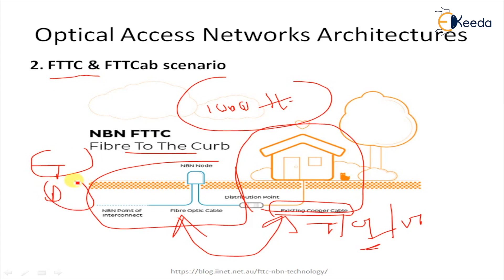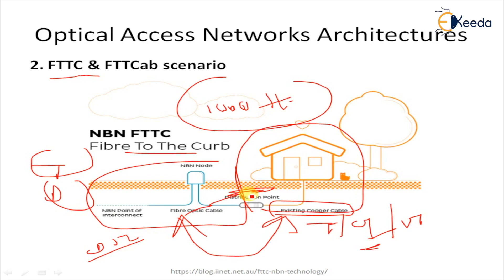FTTC involves running a fiber cable from the telephone exchange or distribution point to street cabinets, which connect to standard phone lines or broadband connections. This is combined with existing copper cable from the cabinet to the home or business using DSL or a similar technology, delivering much faster speeds over a certain distance.